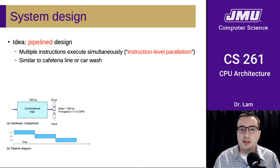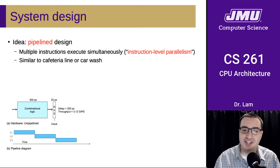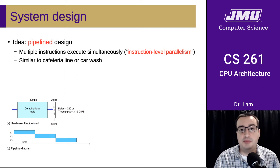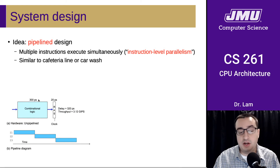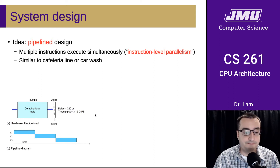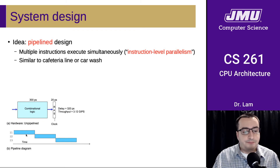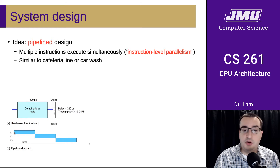Hopefully this idea is somewhat intuitive. It's very similar to the idea of a cafeteria line or going through a car wash. If the entire cafeteria line has to pause while one person goes through it, it's not going to be a very efficient cafeteria line. Instead, you set up a bunch of different stations so multiple customers can be served at the same time at different stations. Here's a picture of an unpipelined CPU — all the combinational logic runs at once, taking 300 picoseconds, plus the clock register at the end. There's no parallelism: the first instruction executes in its entirety, then the second begins, and so forth.